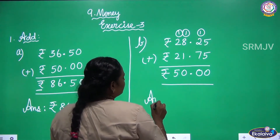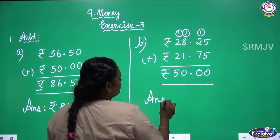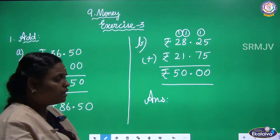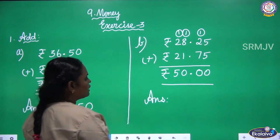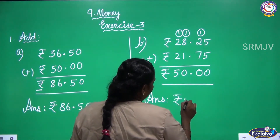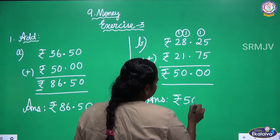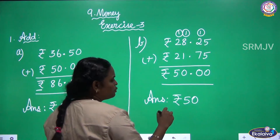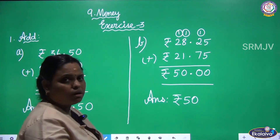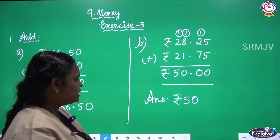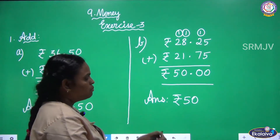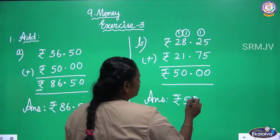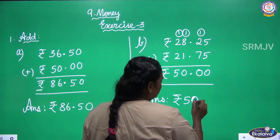See here there is no Paise — only 00. So you can write in the answer only Rupees 50. 50.00 and Rupees 50 are the same, so you can write Rupees 50 alone.